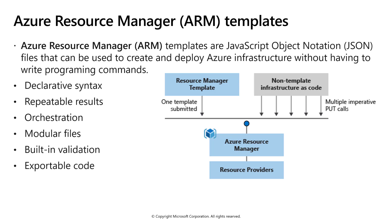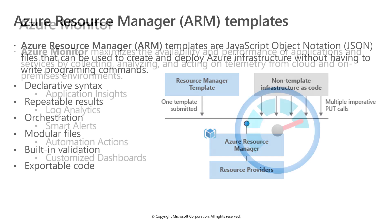With Azure Resource Manager, you can also control who in your organization can perform actions on resources. You manage permissions by defining roles and adding users or groups to those roles. For critical resources, you can apply an explicit lock that prevents users from deleting or modifying the resource. Azure Resource Manager logs all user actions so you can audit those actions. For each action, the audit log contains information about the user, time, events, and status.